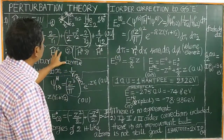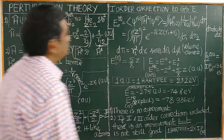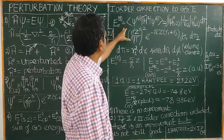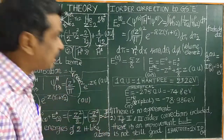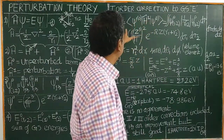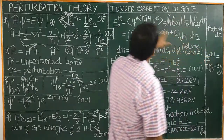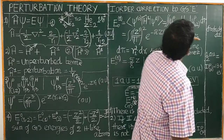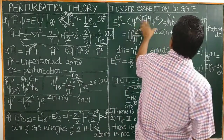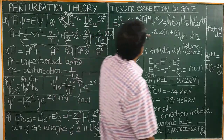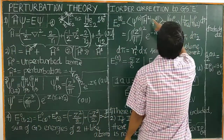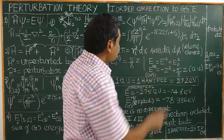The perturbation Hamiltonian H-hat prime gives the perturbation energy. The perturbation energy is given by the expectation value theorem, which we have studied in the postulates of quantum mechanics. It is represented in bracket notation and integral notation for 2 electrons. The general formula for first-order perturbation energy involves psi for the helium atom. Let us substitute the wave function of helium atom.